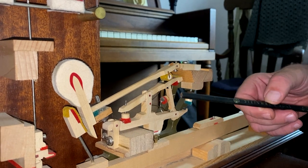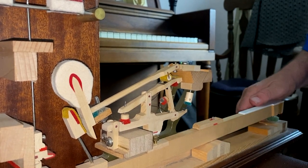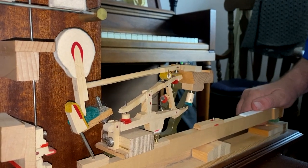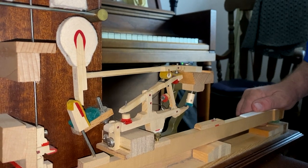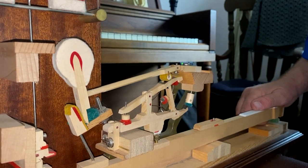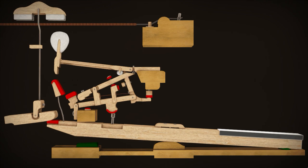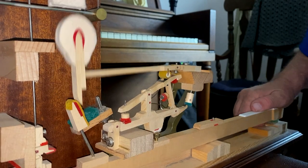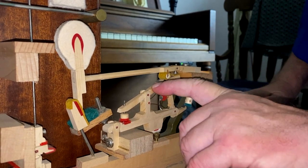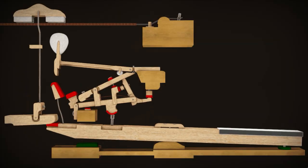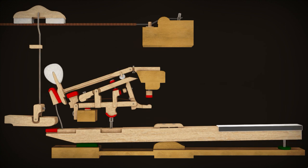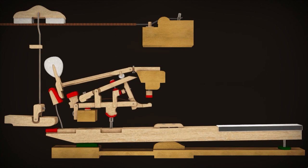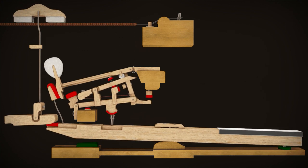What the repetition lever does is make it possible to strike the string several times without having the key come to a full upright position. When you strike the key, the repetition lever supports the shank and allows the jack to slide underneath the knuckle again so that the string can be struck several times without the key coming to a full upright position.